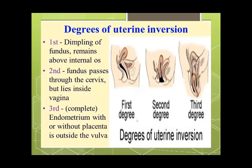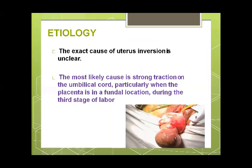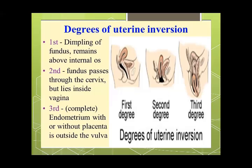Due to the constriction ring, replacement becomes very problematic. Importantly, when uterine inversion happens, the hemorrhage is not the main problem — rather it is the vasovagal shock. The pain and the vagal shock that occurs will be a serious problem for the patient.